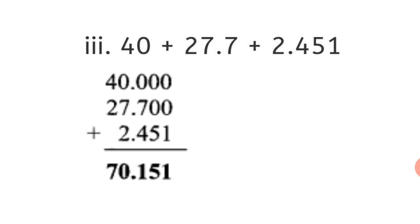Third sum. 40.000 plus 27.700 plus 2.451. So, you will see the arrangement. Decimal point below decimal point. And the numbers which are to the left of decimal point will come accordingly. And those to the right will be written as it is. If there are no numbers to the right, we just put a 0 to cover up the empty space. Okay, now add. 0 plus 0 plus 1 is 1. 5. 7 plus 4 is 11. 1 carried over. 7 plus 1, 8 plus 2. 10. 0, 1 carried over. 4 plus 2, 6. And 1 carried over. 7. So, your final answer is 70.151. Do not forget to write the decimal point.